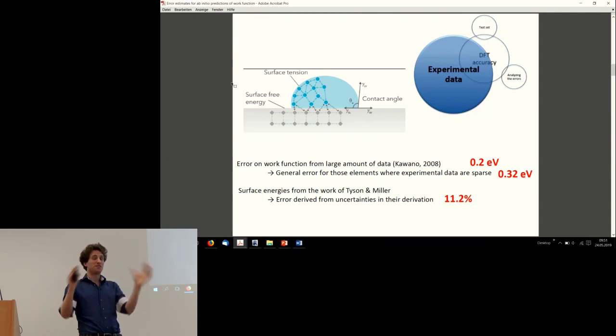For the surface energies this is completely different because this is not a directly observable quantity, so it's much harder to compare. You end up with these experimental derivation procedures where they start from some contact angles at a melting point. We took those values as they are, but we took into account a large error bar on all the procedures that they used. It's about 11.2 percent, and it's size dependent—small errors for small surface energies, large errors for large surface energies.